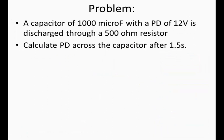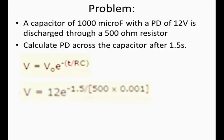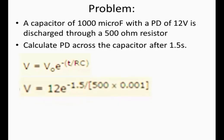Let's look at a problem. A capacitor of 1000 microfarads with a potential difference of 12 volts is discharged through a 500 ohm resistor. You have to calculate the potential difference across the capacitor after 1.5 seconds. The equation is V equals V₀ e to the minus T over RC. Substituting the values, we end up with a value of 0.6 volts after 1.5 seconds.